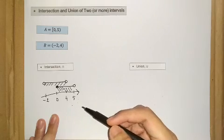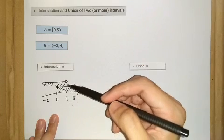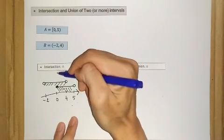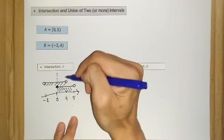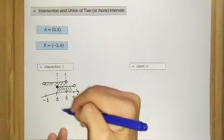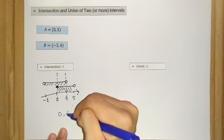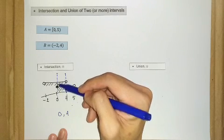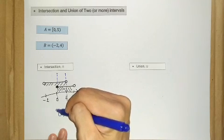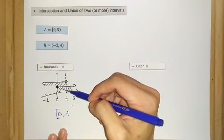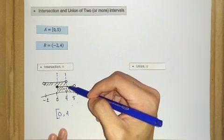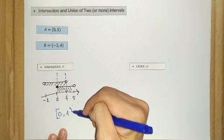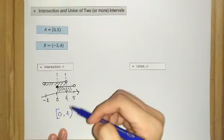Now we look at the intersection between these two intervals. It's quite obvious — we consider the overlapping area from 0 up to 4. For 0, it belongs to set A and it also belongs to set B, so 0 is included and we denote it with a square bracket. For number 4, it belongs to interval A, but it doesn't belong to interval B — so 4 is not included and we denote it with a round bracket.